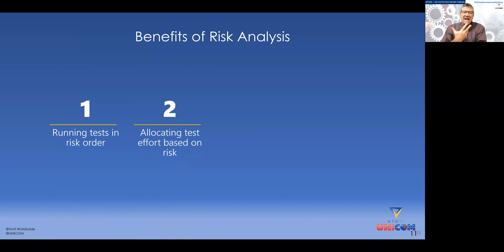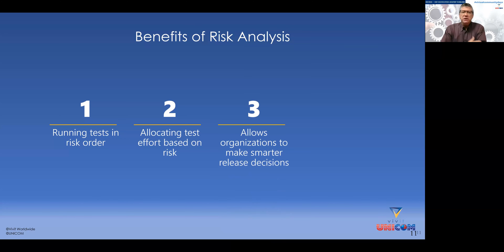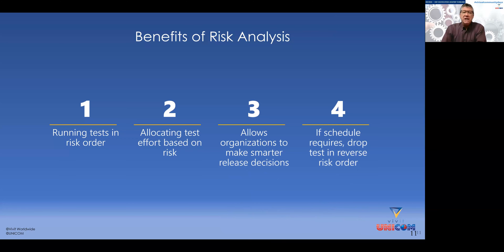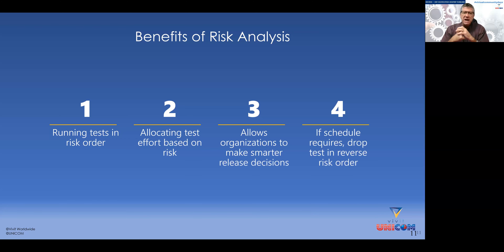By doing risk analysis, the benefits are enormous. It allows us to run tests in risk order — starting with high impact, high probability and executing last our low impact, low probability. We can allocate test effort based on risk, allow the organization to make smarter release decisions — determining whether to postpone a release or whether the risk is greater if we don't release. If the schedule requires, we can drop tests in risk order; if the lowest 1,000 of 5,000 test cases are low impact and low probability, we may execute those only if time permits.